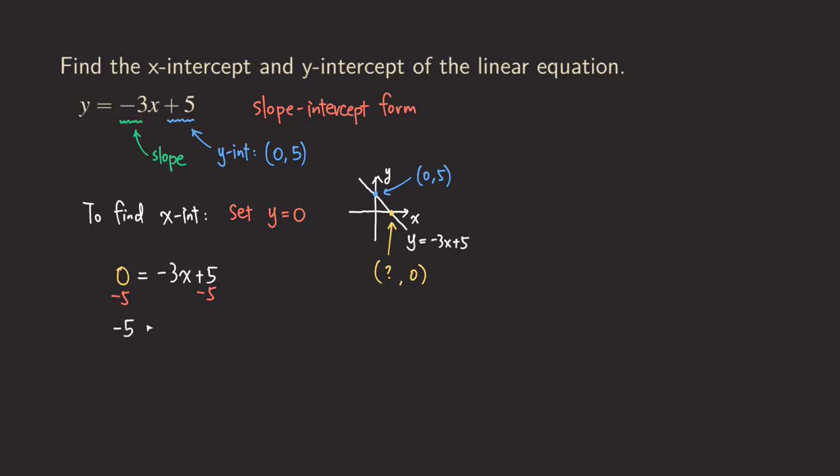And then what happens? Then we are going to get negative 5 equals negative 3x. And then isolating the x means that we get to divide both sides by negative 3 because it's multiplication. So divide both sides by negative 3 here.